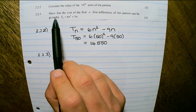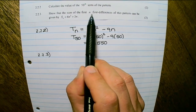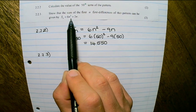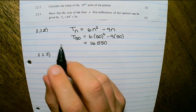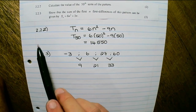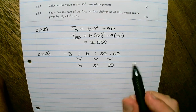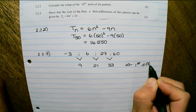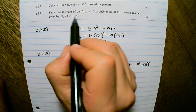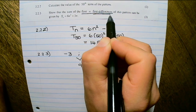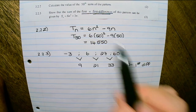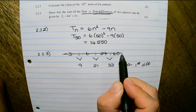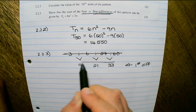The next question says: show that the sum of the first n first differences of this pattern can be given as Sn equals 6n squared plus 3n. In 2.2.1 we found that 9, 21, 33 are the first differences. We are no longer using negative 3, 6, 27, and 60 — we are focusing on the first differences only.